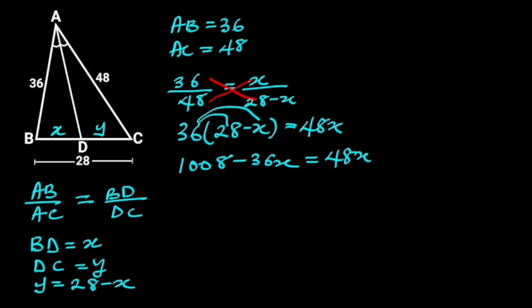Collecting like terms will give us 1008 is equal to 48X plus 36X. 48X plus 36X is 84X. So, 1008 is equal to 84X.